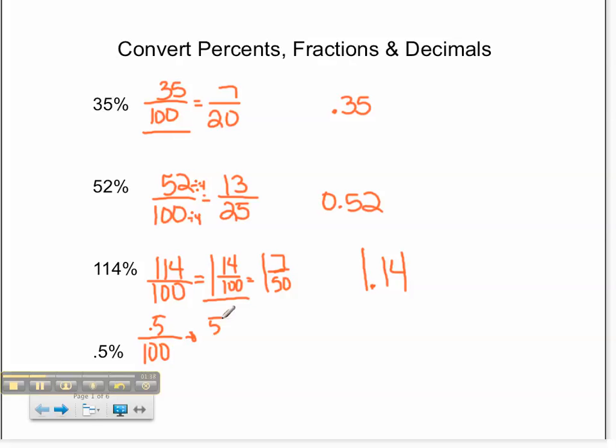Therefore, we will convert that to 5 one-thousandths. 5 one-thousandths can be reduced to 1 two-hundredth. We divide both the numerator and denominator by 5.